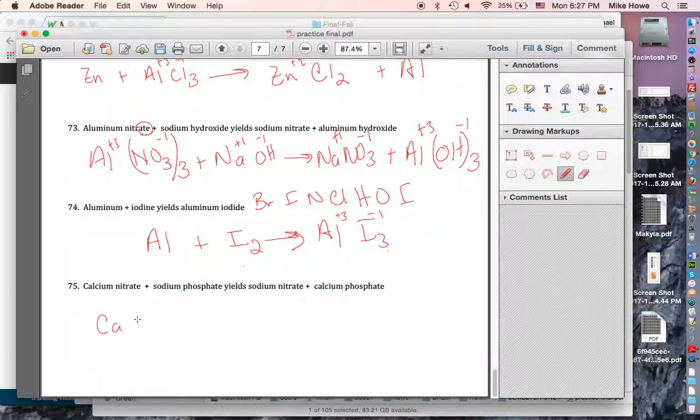Calcium nitrate. That's Ca, nitrate's NO3. I know this. I put a parenthesis here because I knew I was going to have to multiply it. That's +2. That's -1. So I'm going to have to have a 2 out here. And if I need to multiply this by something, I use parenthesis.